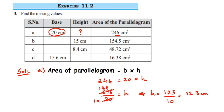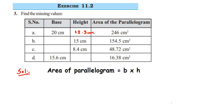So the answer for the first one is 12.3 centimeters. Now for the second question: height is given as 15 cm, base is not given, and the area of parallelogram is 154.5 cm². Using the same formula, area = base × height, substituting: 154.5 = b × 15. We have to find out b, so we transpose 15 to the other side.